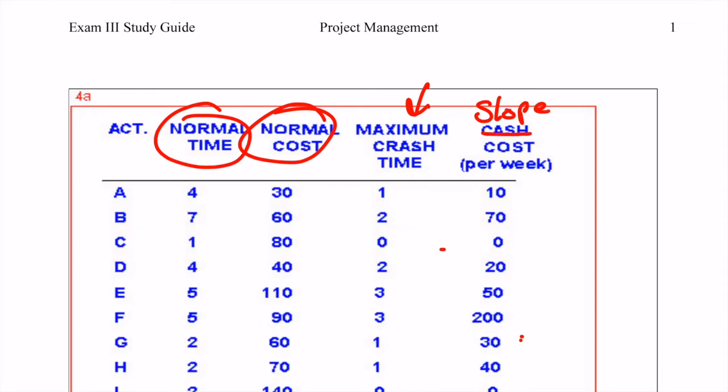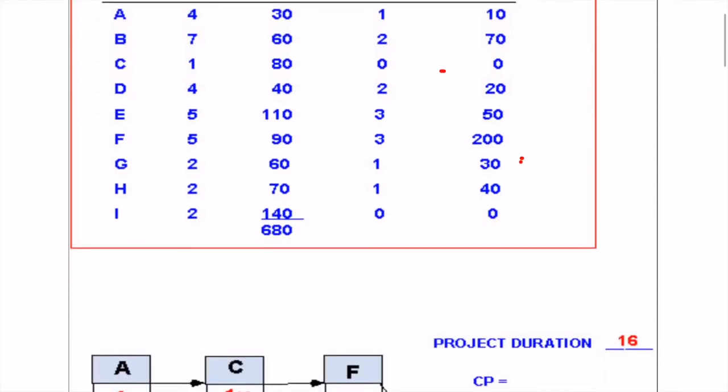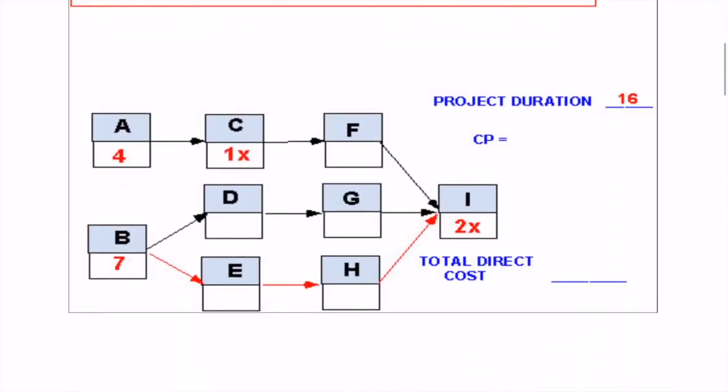I think they meant to say crash cost. So one of the first things we want to do is actually calculate the critical path. It looks like some of this has already been filled in for us. We'll add in the other values here, and we can see that our critical path is going to be this one here.